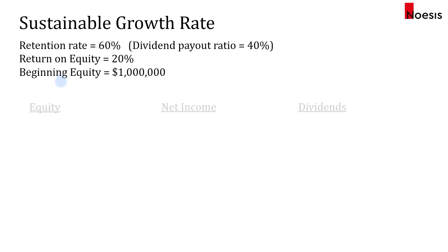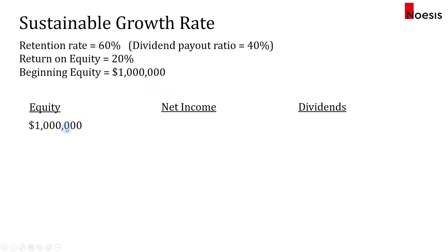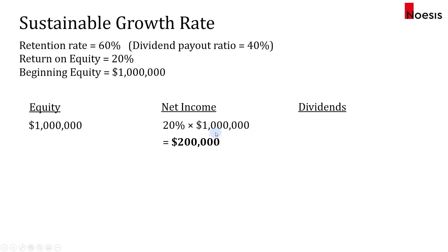We're going to analyze the impact on equity, net income, and dividends. Starting with $1 million equity and assuming a 20% return, that means for the coming year the net income will be 20% times $1 million, which is $200,000.